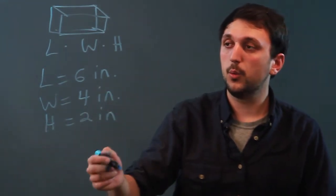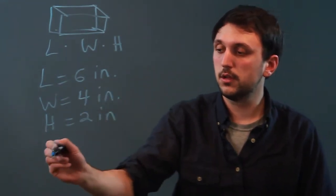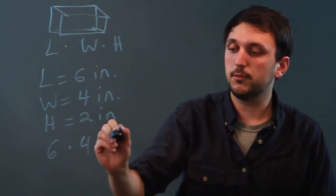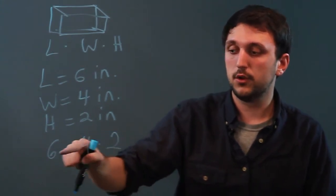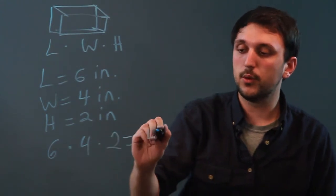So when we multiply, we say 6 times 4 times 2, which is 24 times 2 equals 48.